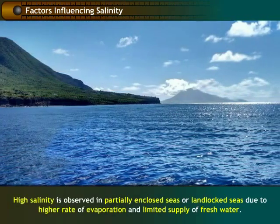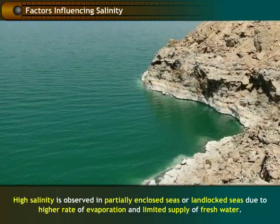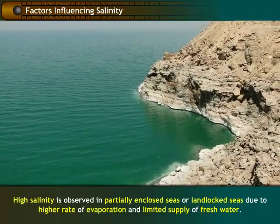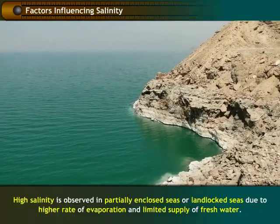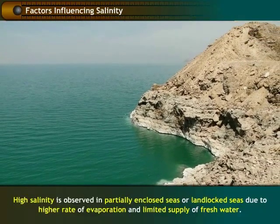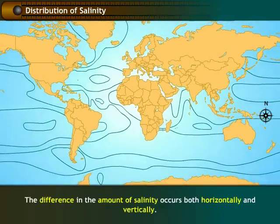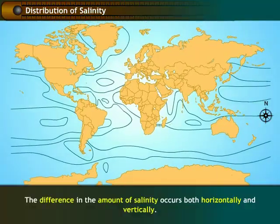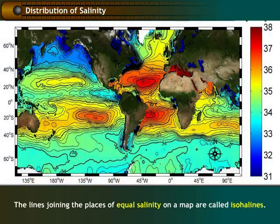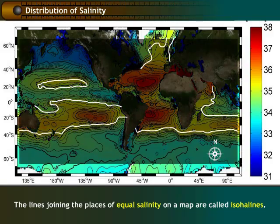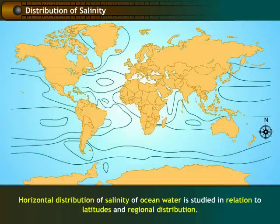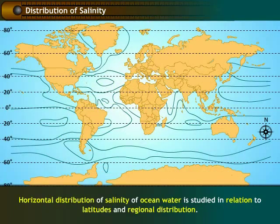High salinity is observed in partially enclosed seas or landlocked seas, due to a higher rate of evaporation and limited supply of fresh water. The difference in the amount of salinity occurs both horizontally and vertically. The lines joining the places of equal salinity on a map are called isohelines. Horizontal distribution of salinity is studied in relation to latitudes and regional distribution.